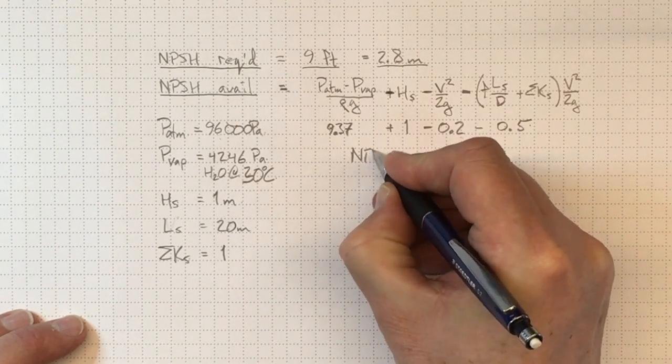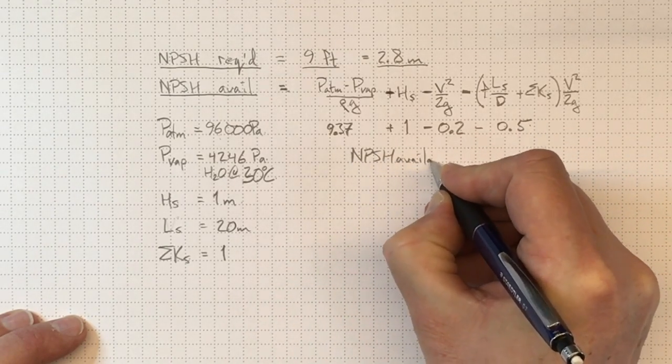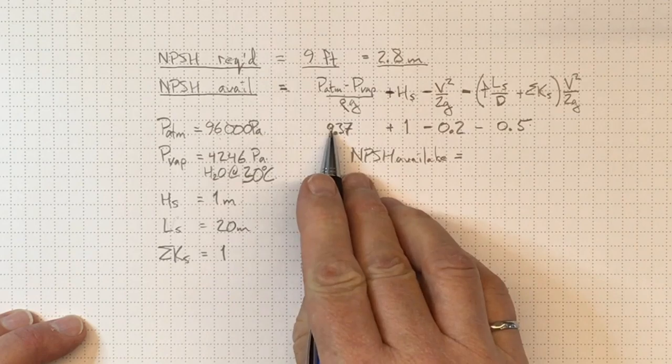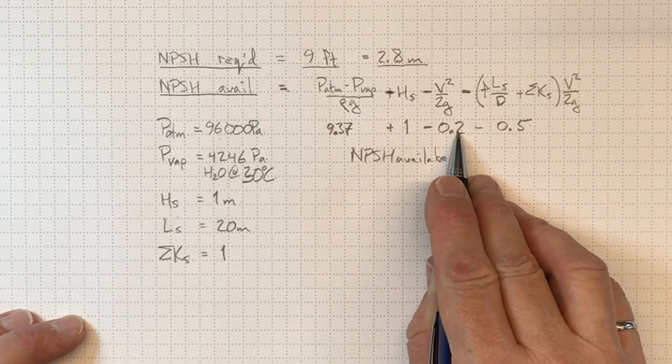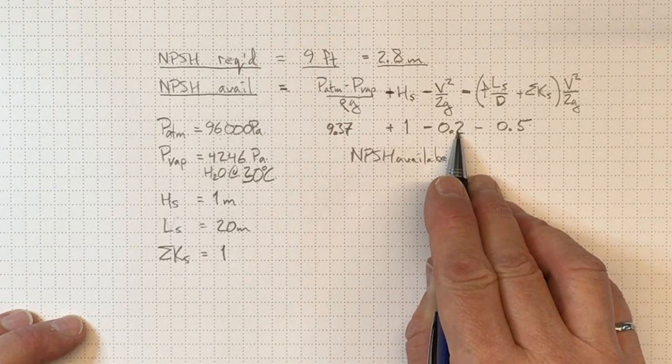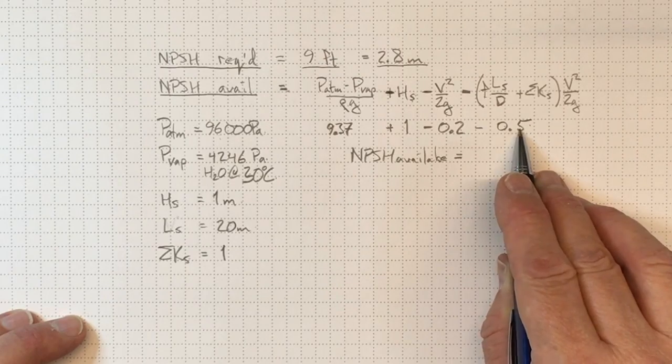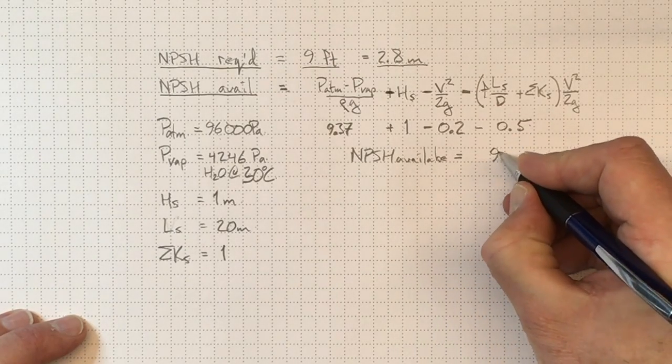And we'll wind up with a net NPSH available equal to 9.37, 10.37, minus 0.2 takes us down to 10.17, minus 0.5 takes us down to 9.67 meters.